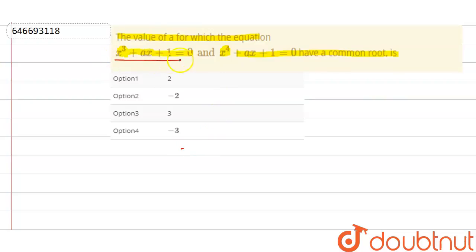What you do is just multiply this thing with x and then write. So that is x to the power 4 plus ax square plus x is equal to 0.